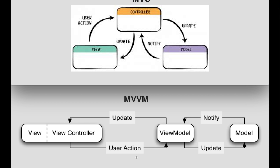In MVVM, if the user is doing any action on the view, those actions are notified to the view model because the view controller holds an instance of the view model. Whatever actions happen on the view are notified to the view model, and the view model asks for the particular data from the model. The model then notifies or sets some observers back to the view model with that data.